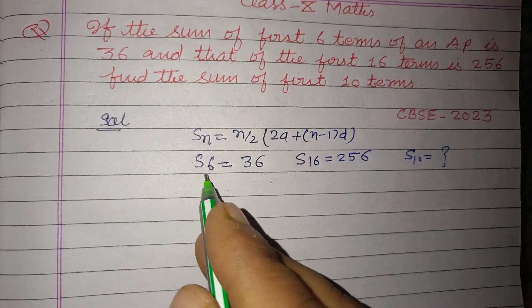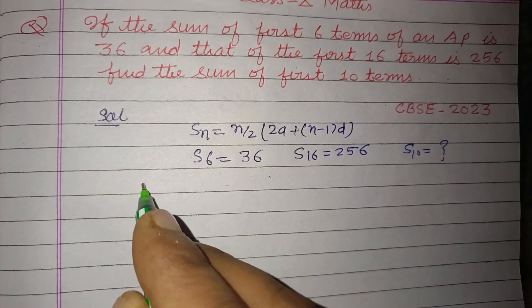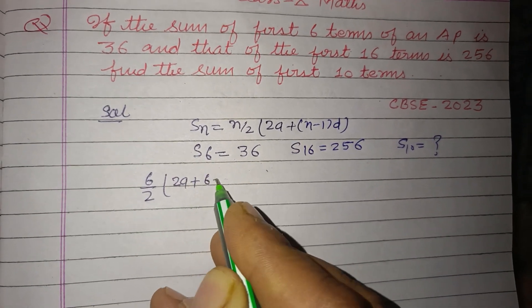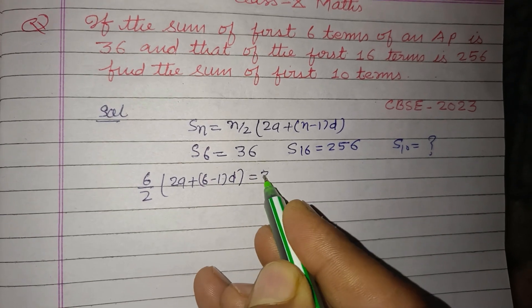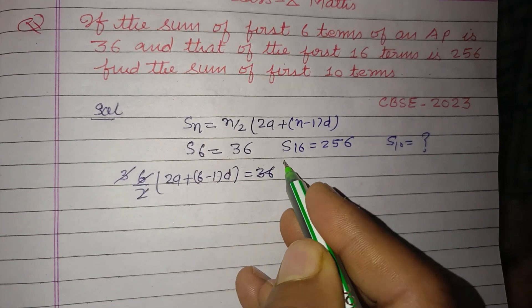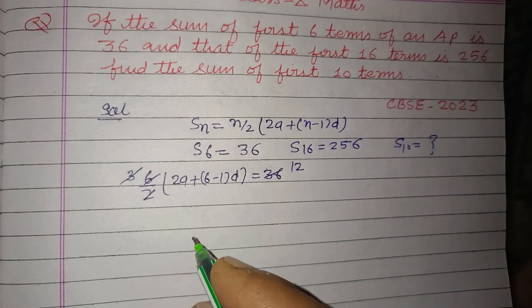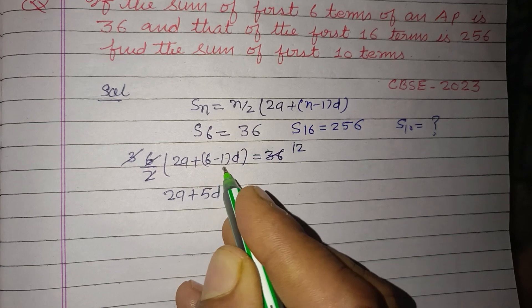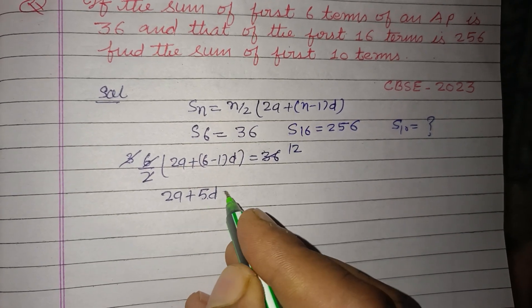So putting the value S_6, n is 6 here. So 6/2(2a + 6-1 into d) that is 36. 3 times (2a + 5d) equals 36, so 2a + 5d equals 12.